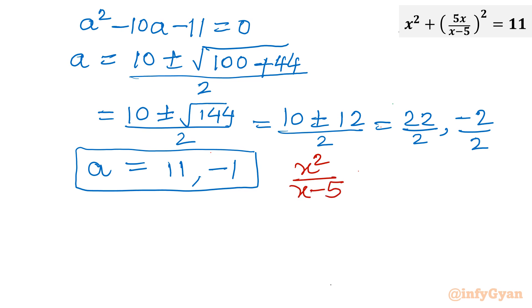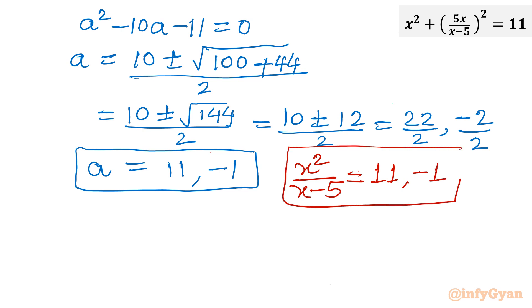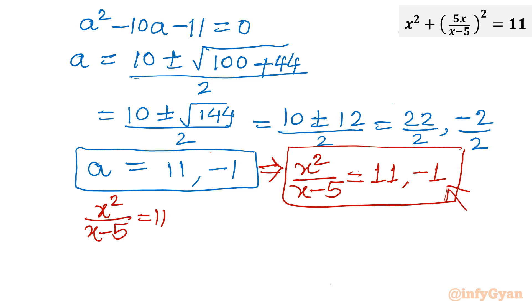Now we will put back the value of a. We have a = 11 and a = -1, giving us two equations: x²/(x-5) = 11 and x²/(x-5) = -1. Let us solve the first one: x²/(x-5) = 11.